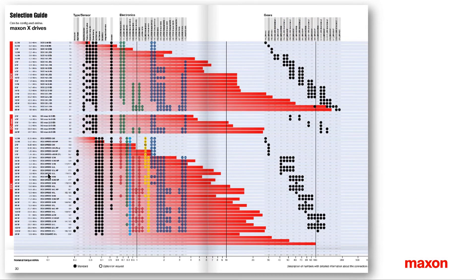A good overview of the nominal torque of Maxon motors is offered by the selection guide in the catalogue. The red bars indicate the torque capabilities with respect to the scale at the bottom. You can also find here a lot of additional information such as possible combinations with encoders, gears and controllers.